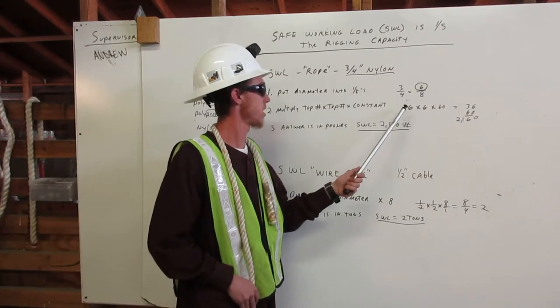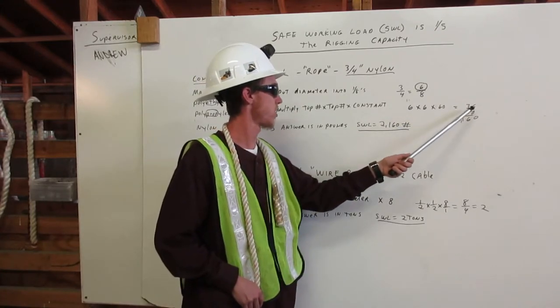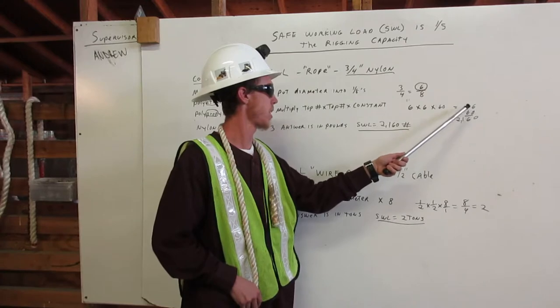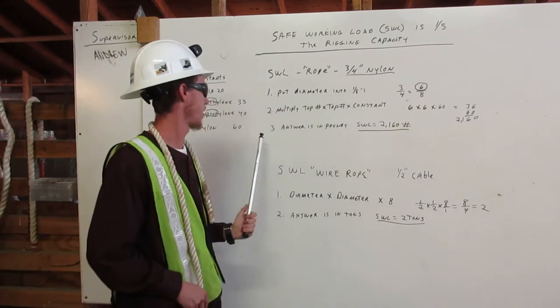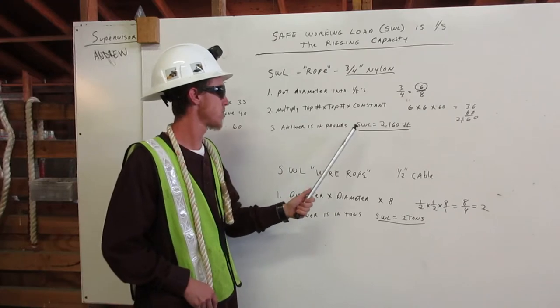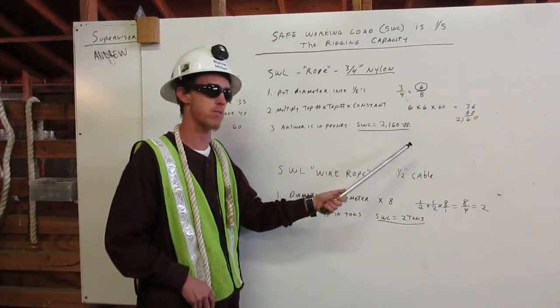So we get the six times six, which is thirty-six, and then times that by sixty. We get two-thousand one-hundred and sixty. Number three, answer is in pounds. Safe working load equals two-thousand one-hundred and sixty pounds.